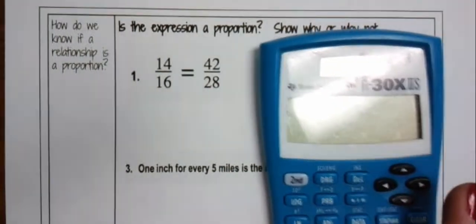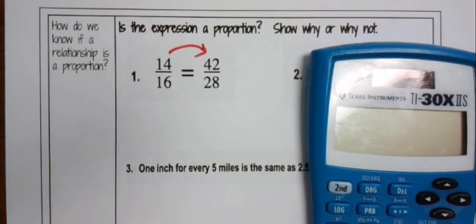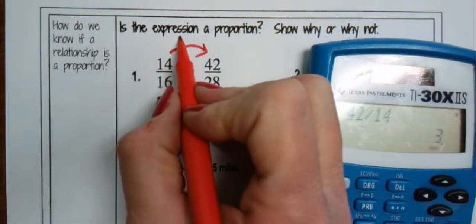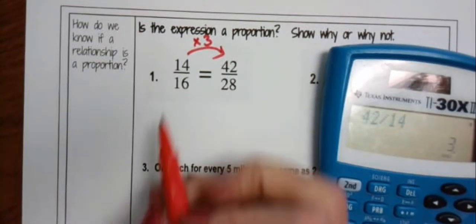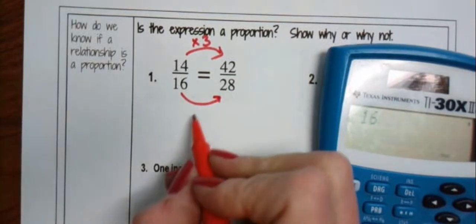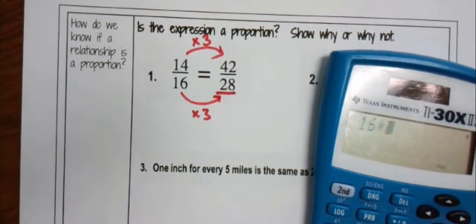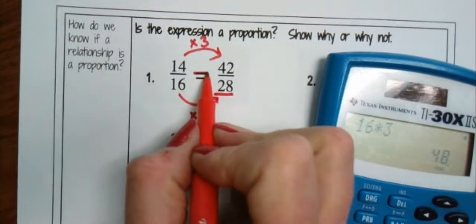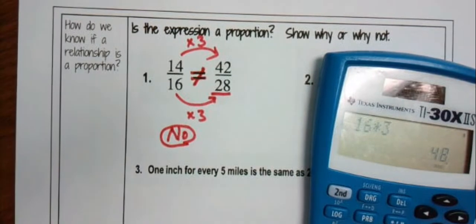There is a nice factor of change relationship between 14 and 42. If you take 42 and divide it by 14, you'll see that it's really just being tripled — 14 times 3 is 42. Is that also true for the denominator? If I take 16 and multiply it by 3, am I going to get 28? Well, 16 times 3 is 48, so these are not equal. They're not proportional — no.